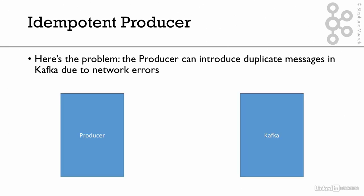Here's how it can happen. We have the producer and we have Kafka, and the producer places a good request. It produces data to Kafka, Kafka says it got the data, commits it, and then sends back an acknowledgment. That's what I call a good request.